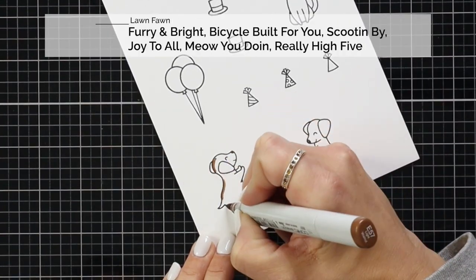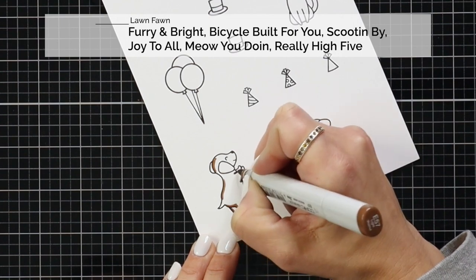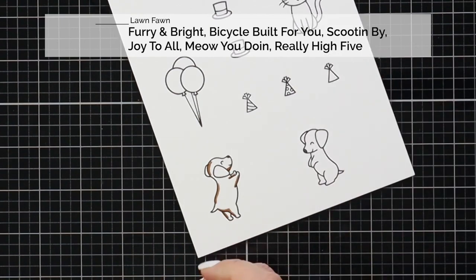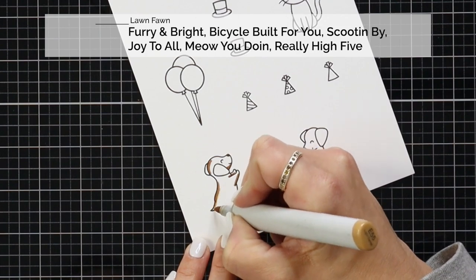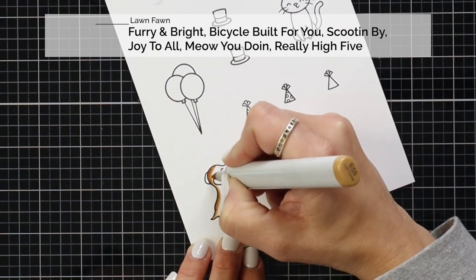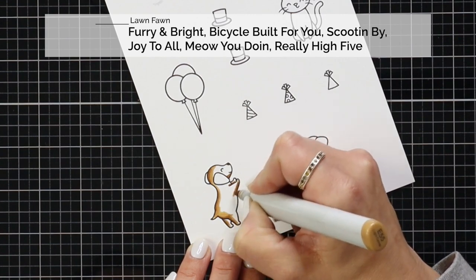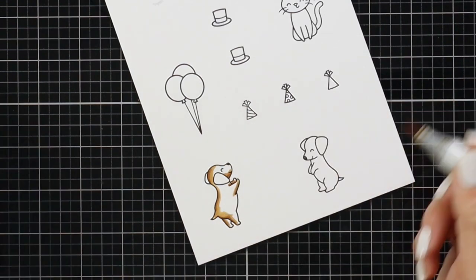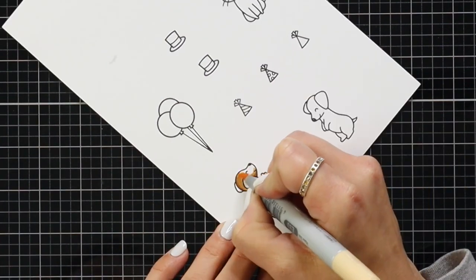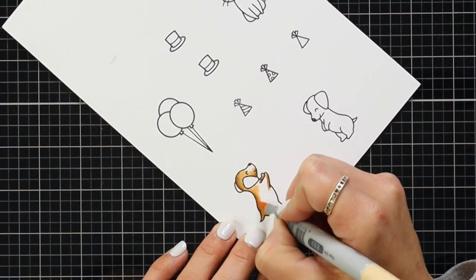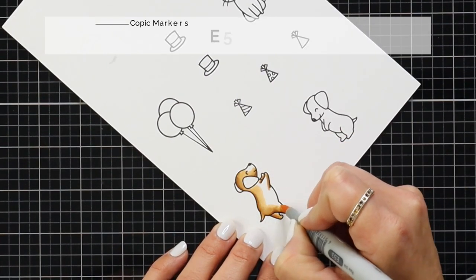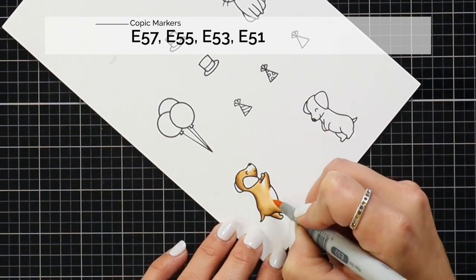I knew I wanted these adorable little dogs. This first one I'm coloring is from Furry and Bright. I also had stamped that little dog from Joy to All but I didn't end up using it. I also have some balloons and some of these cute top hats from Bicycle for You. I have some party hats from Scootin' By and Really High Five and the cat comes from the stamp set Meow You Doing.